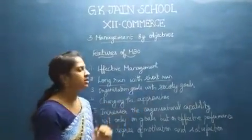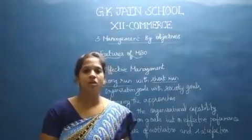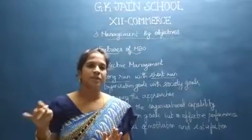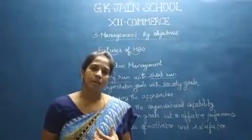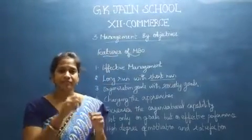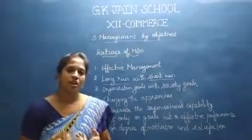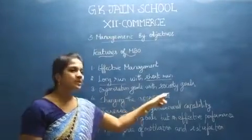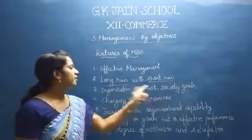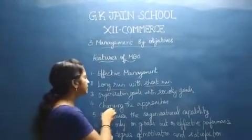The third feature is combining organizational goals with society goals. Each company will have their goals, and management by objectives will try to relate those to society goals. Society goals refer to what the employees and people expect and require from the company side — in monetary or non-monetary forms. MBO will combine each society's goals with the organizational goals.